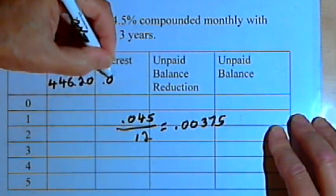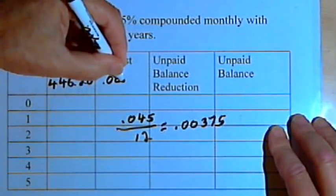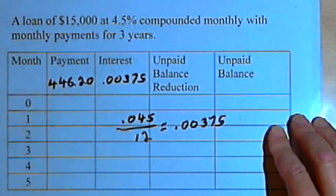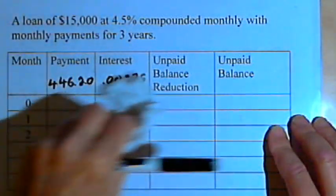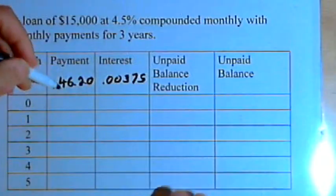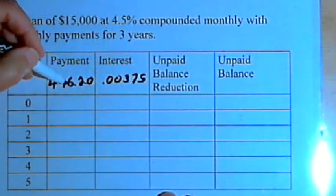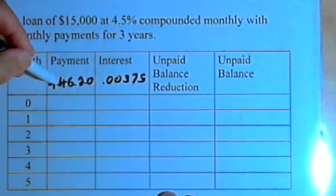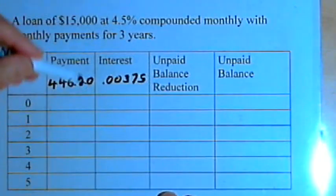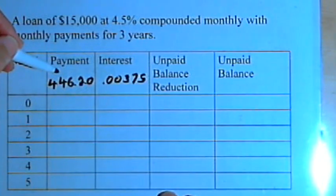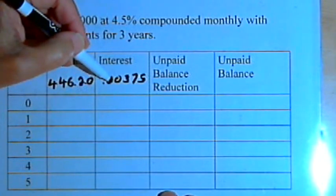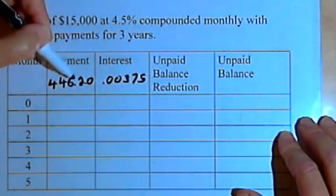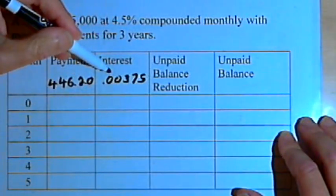I'm going to put that in here. In a normal table we wouldn't fill in these two amounts — I wouldn't put the $446.20 up at the top where it says payment, and I wouldn't fill in the interest rate — but I want to be able to refer to that, so I'll just leave it in there for now.